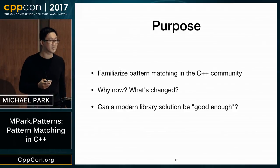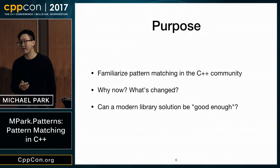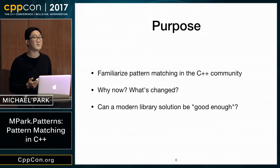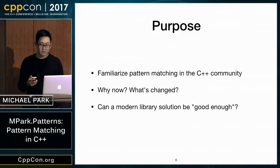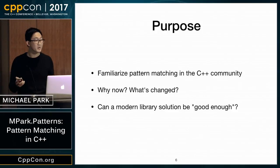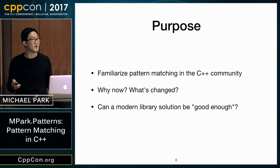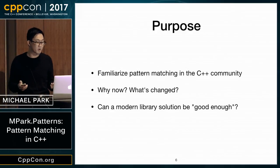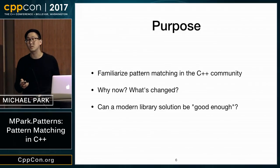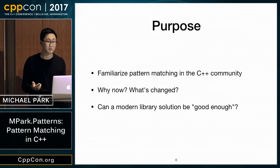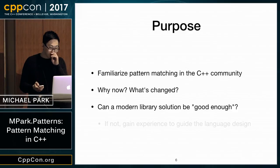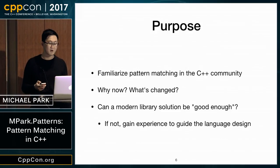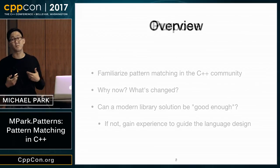Can a modern library solution be good enough? We've been adding more language features and libraries and getting more power to write more powerful libraries. We have facilities like tuple, variant, and pair that are considered library solutions and seem to be working okay. On the other hand, there are libraries like Boost Lambda that warranted a language-level feature. And if a library solution is not sufficient, at least we can gain experience from building one to guide language design.